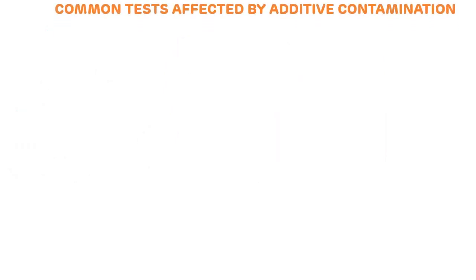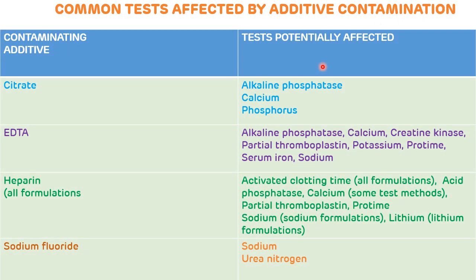Now, common tests affected by additive contamination. This table shows the contaminating additive and the tests potentially affected by them. If the contaminating additive is citrate, it can affect alkaline phosphatase (ALP), calcium, and phosphorus. If the contaminating additive is EDTA, it can affect ALP, calcium, creatinine kinase, partial thromboplastin time, potassium, prothrombin time, serum iron, and sodium levels.